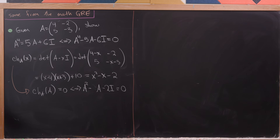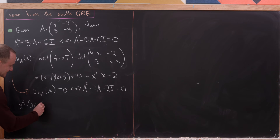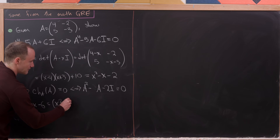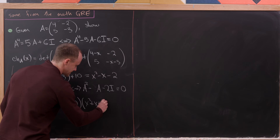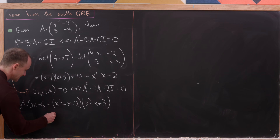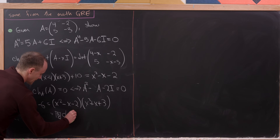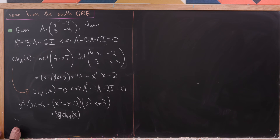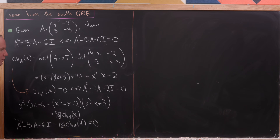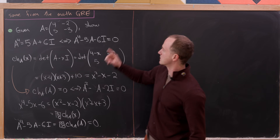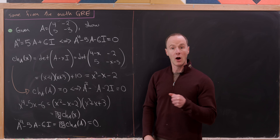Now consider the polynomial x⁴ − 5x − 6 and observe that it factors as (x² − x − 2)(x² + x + 3). This means x⁴ − 5x − 6 equals something times the characteristic polynomial. Therefore A⁴ − 5A − 6I equals that same expression times the characteristic polynomial evaluated at A, which is zero — exactly what we wanted to show.